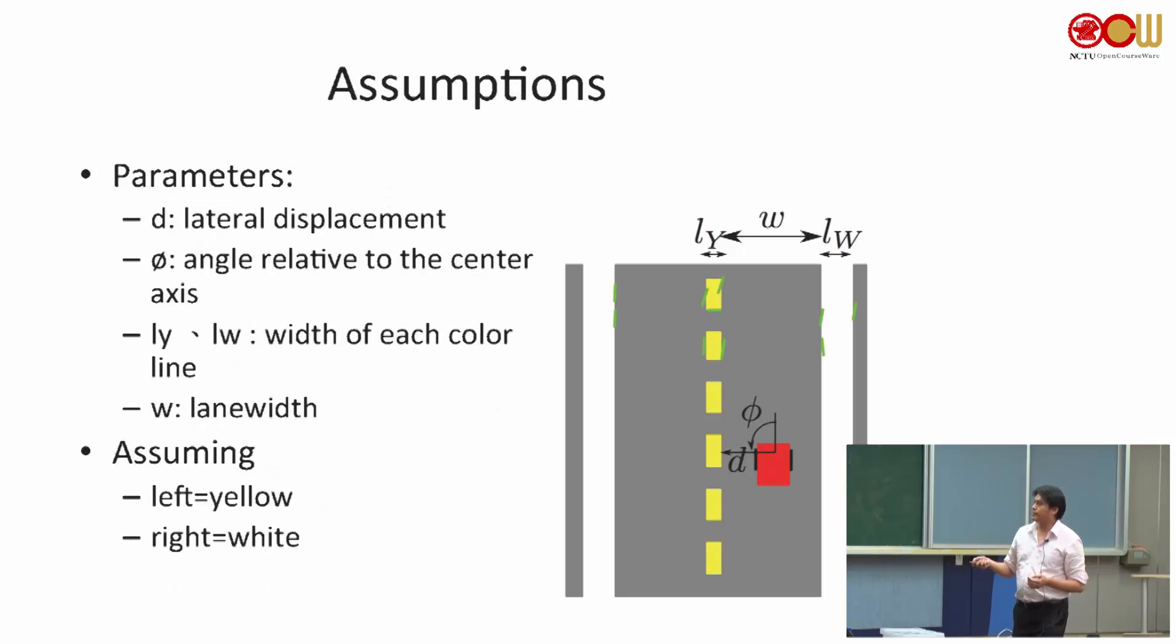Again, we use d over here, from here. So this is the positive from here to here. And the phi, that's the angle of this direction. And L_Y and L_W, that's the width of the color line and the lane width. And over here, we have an assumption that the car will stay in the center and the left-hand side is the yellow one and the right-hand side is the white one. So when the camera sees different line segments with different colors, we will deal with those line segments differently. And you will see it in the pseudocode.